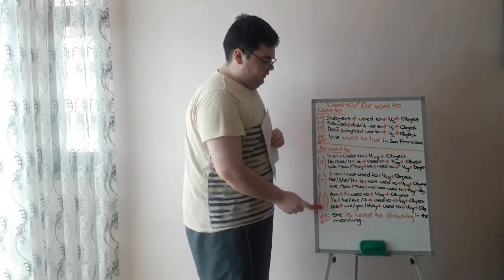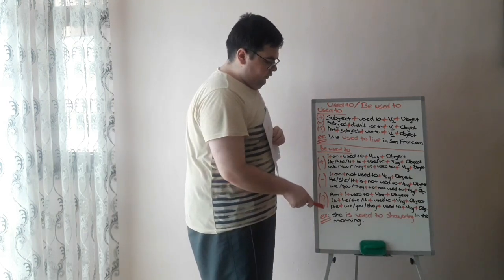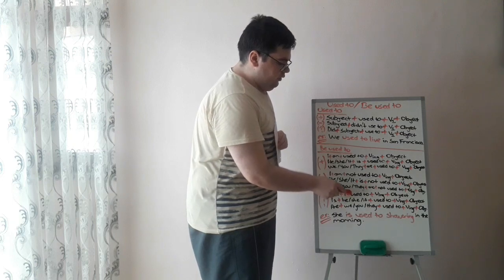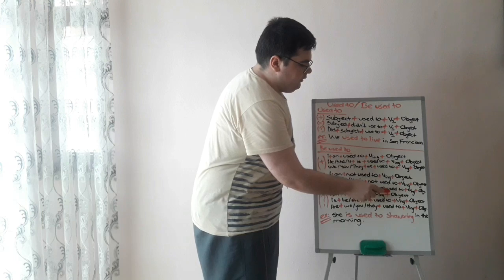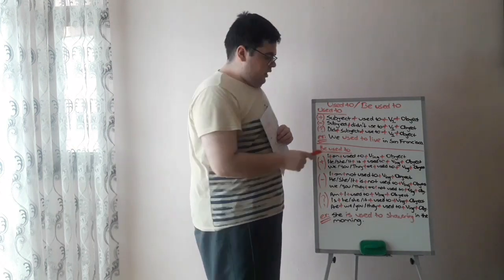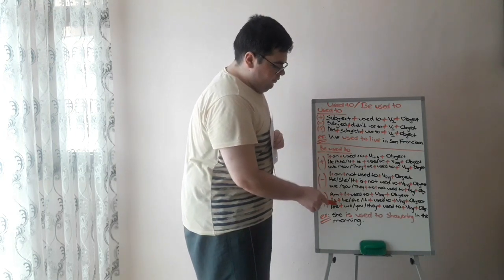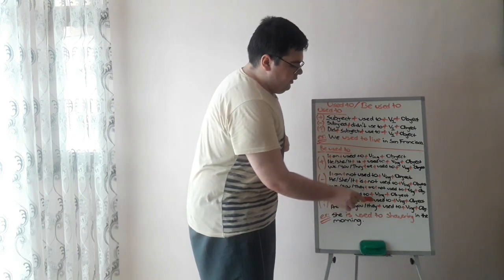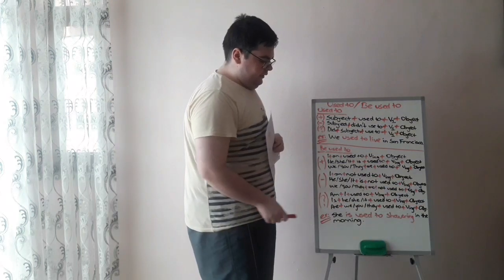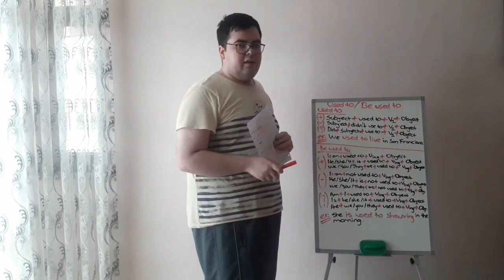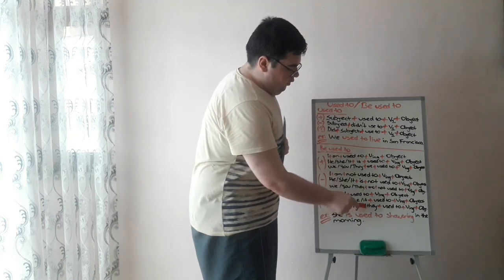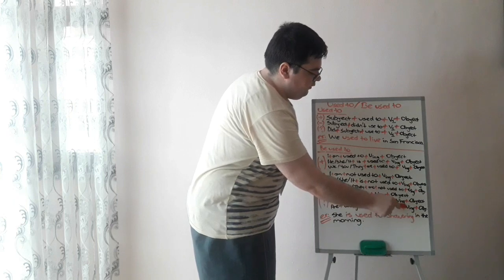If we want to create a question sentence using be used to, we conjugate be into present continuous. For I: am plus I, plus used to, plus verb one, plus object. For he, she, or it: is plus he, she, or it, plus used to, plus verb one, plus object. For plurals, we conjugate be into are: are plus we, you, or they, plus used to, plus verb one, plus object.